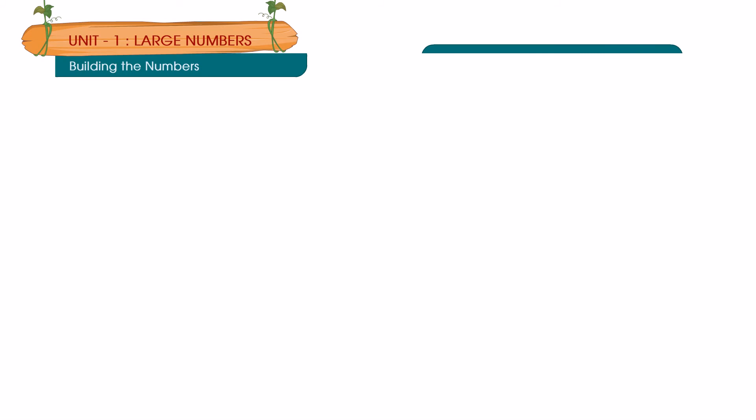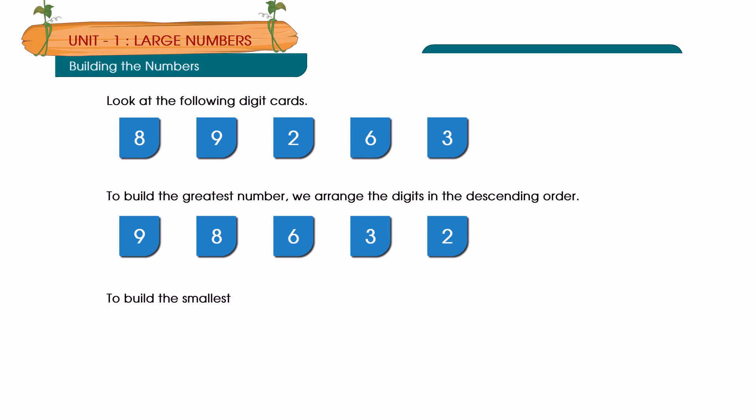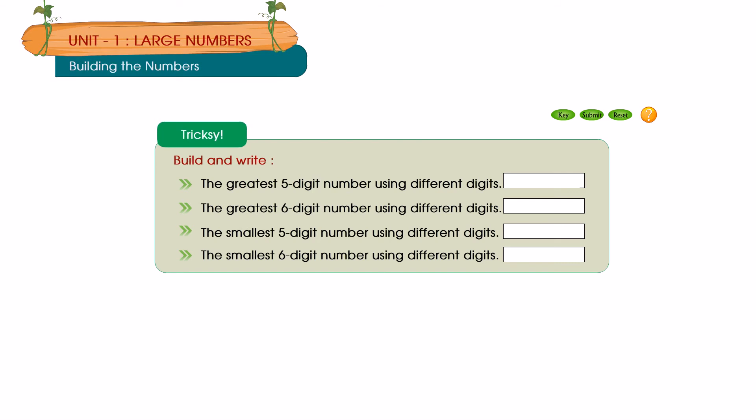Building the numbers: Look at the following digit cards: 8, 9, 2, 6, 3. To build the greatest number we arrange the digits in the descending order: 9, 8, 6, 3, 2. To build the smallest number we arrange the digits in the increasing order: 2, 3, 6, 8, 9.